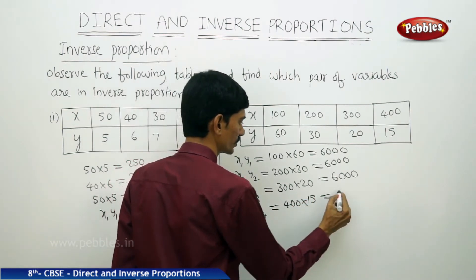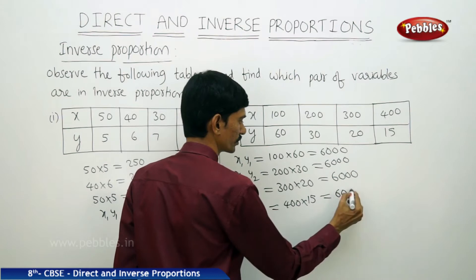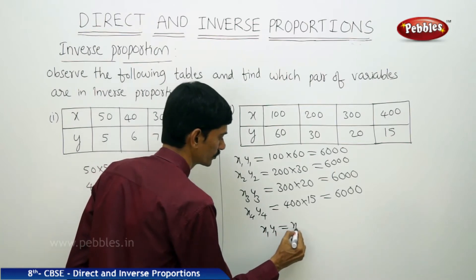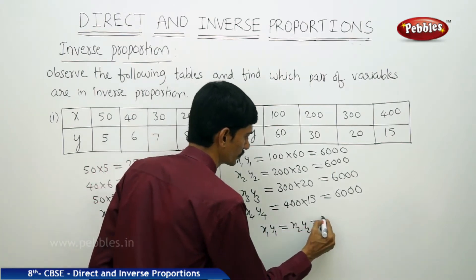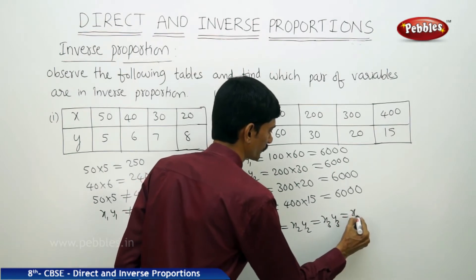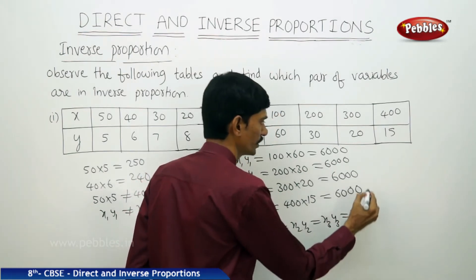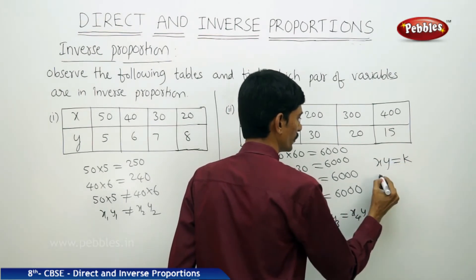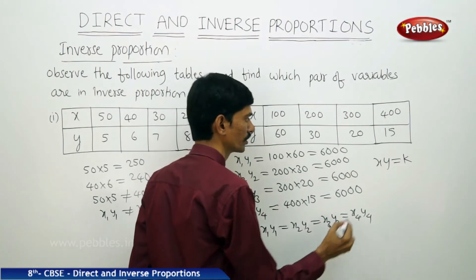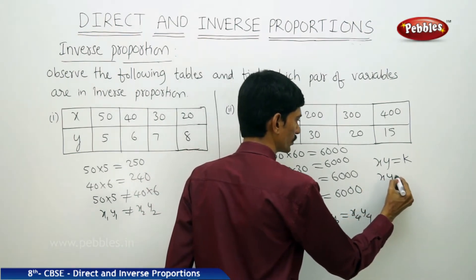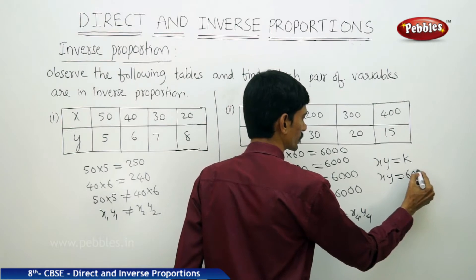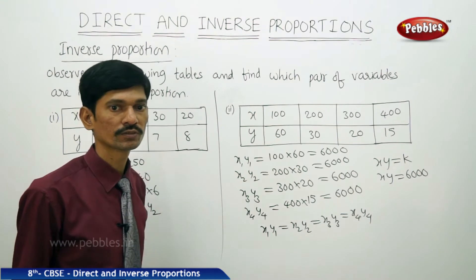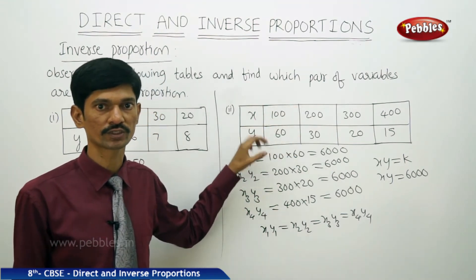We get that x1 into y1 equals x2 into y2 equals x3 into y3 equals x4 into y4. The constant value here is 6000. Since the product of these two quantities remains constant at 6000, these two quantities are in inverse proportion.